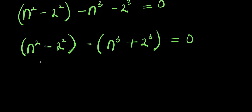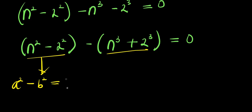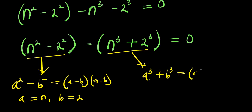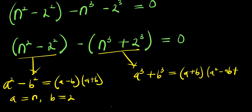So we can expand and show this. For the first group, we are making use of difference of two squares: a squared minus b squared equals (a minus b)(a plus b), where a equals n and b equals 2. For the second group, a cubed plus b cubed equals (a plus b)(a squared minus ab plus b squared), where a equals n and b equals 2.